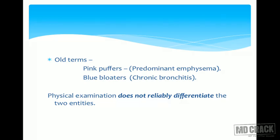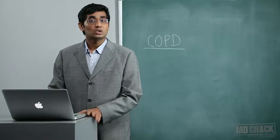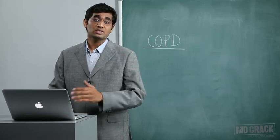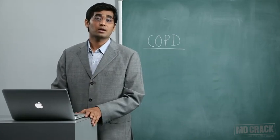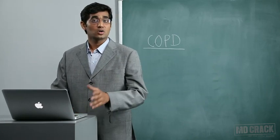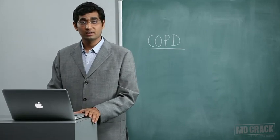Pink puffers and blue bloaters are famous old terms. Pink puffers were said to have predominant emphysema, and blue bloaters predominant chronic bronchitis. However, it is not easy to differentiate these two entities clinically, so while these terms may appear in exams, they are not very significant in today's era.